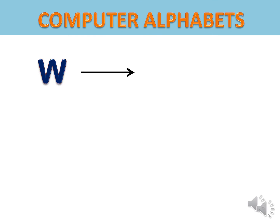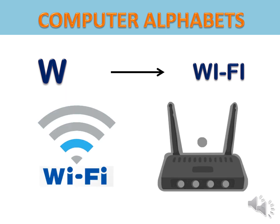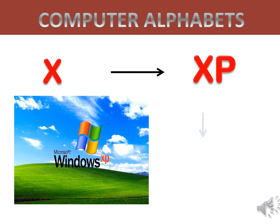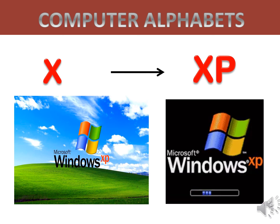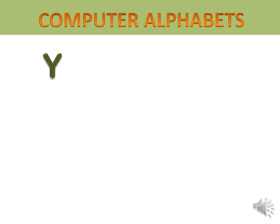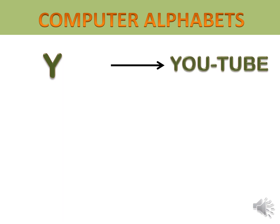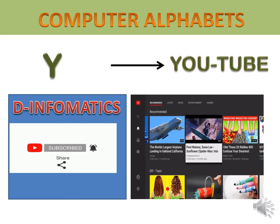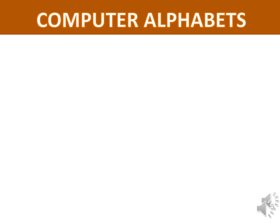W — Wi-Fi. X — XP Windows Operating System. Y — YouTube. Z — Zip File.